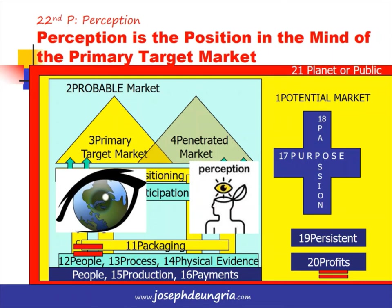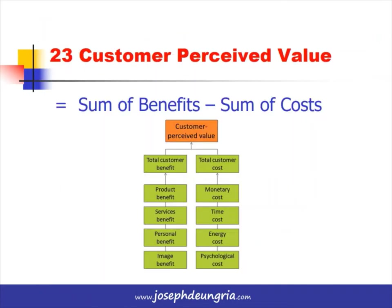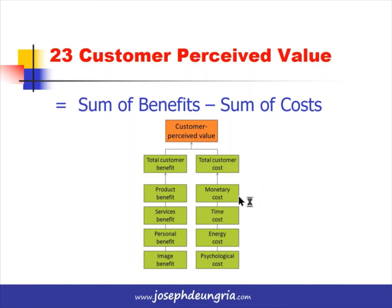Looking in depth at perception, what's important to the customer is Customer Perceived Value — the difference between the sum of benefits and the sum of costs. Benefits include functional benefits from using the product or service, personal benefits, and image benefits such as using an iPhone or a Rolex watch. Costs include the cost of procuring, the cost of time to get it, and psychological costs. Customer perceived value is the total benefits minus total costs.